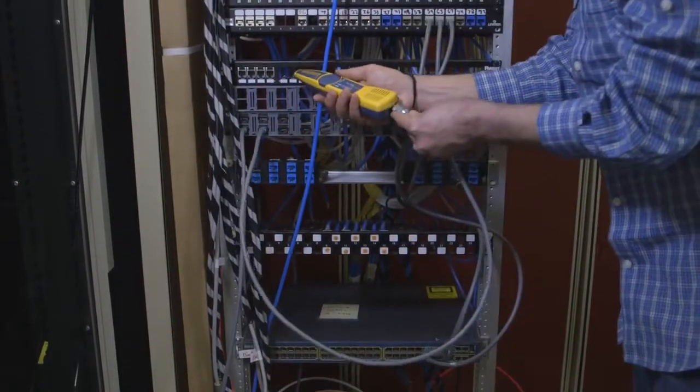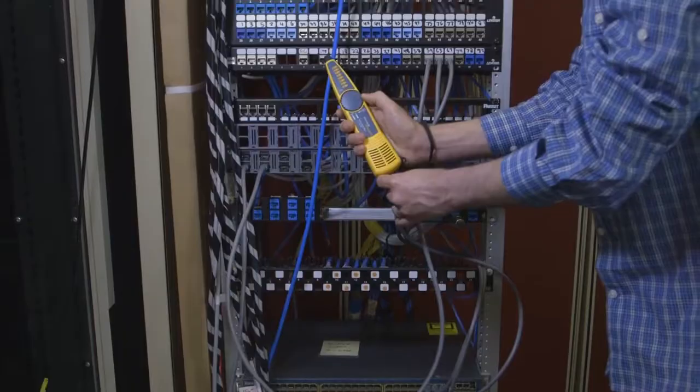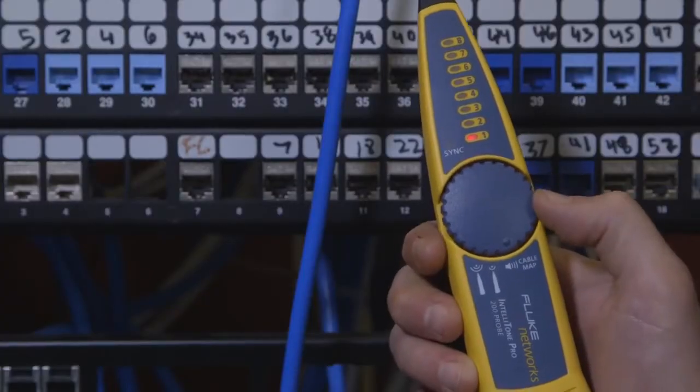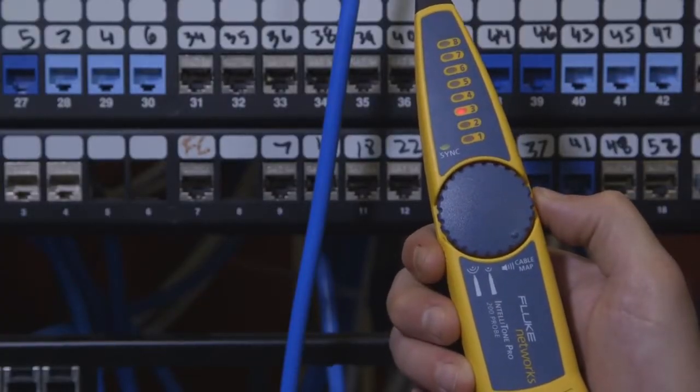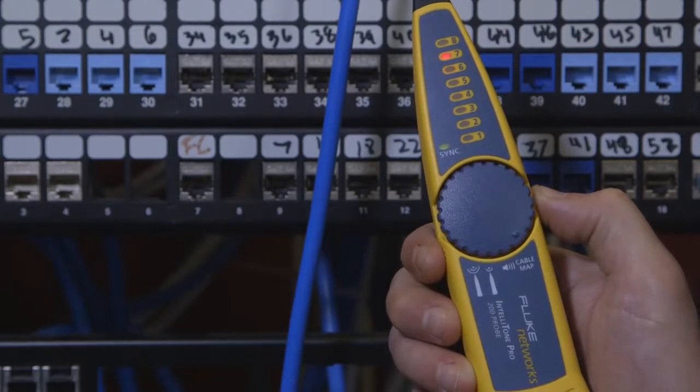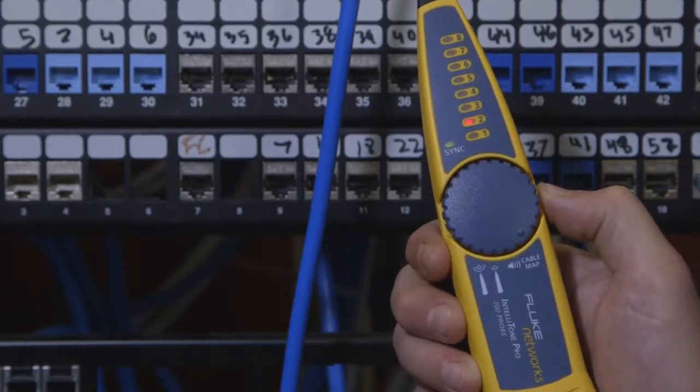Here's the cable. We can now check the wire map by just switching to cable map mode on the probe. We just located a cable plugged into an active switch without disrupting the network.